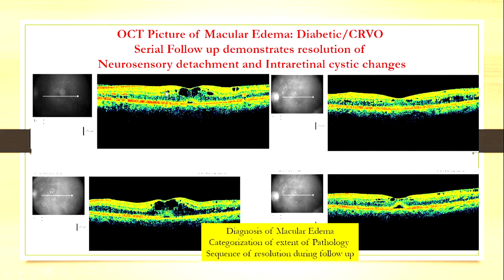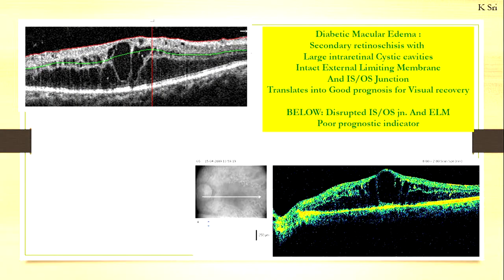The other situation: a patient with diabetes. In diabetes you can also get the same kind of cysts. Here you see you have a neurosensory detachment also. And when you treat them, you can see that the neurosensory detachment also can go away and the cysts also become less. So diagnosis of macular edema — both diabetics, CRVO, BRVO — you can make with OCT, and then monitor the sequence of their resolution and their recurrence.